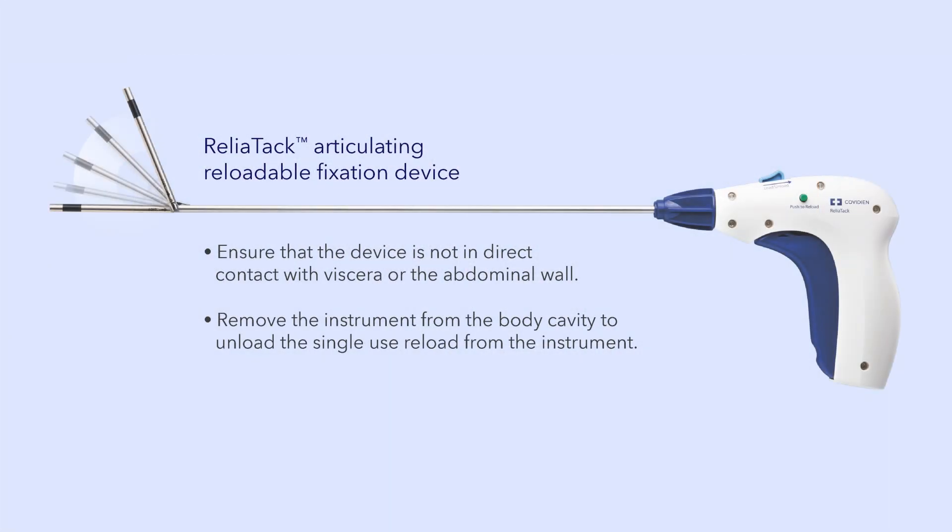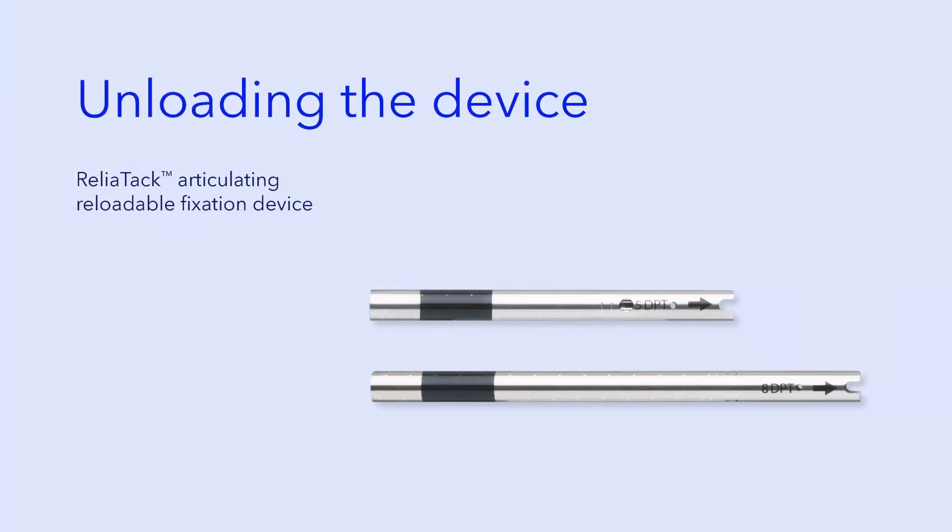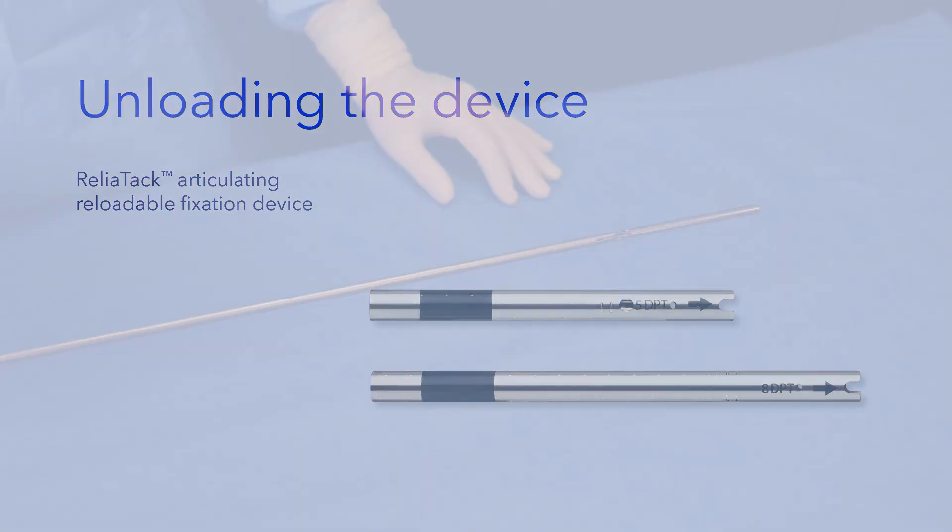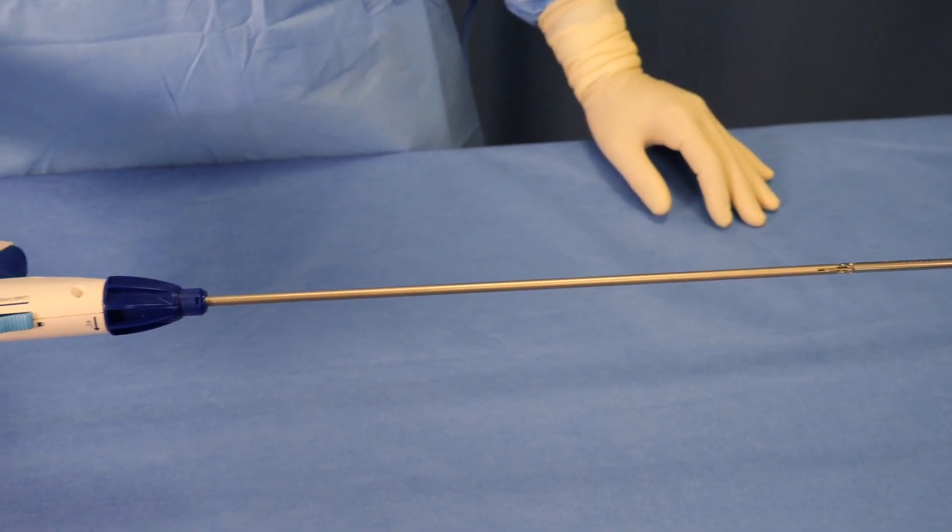After the reload has been completely fired, straighten the Reliatak device by turning the articulation knob counter-clockwise with a single turn, ensuring that the device is not in direct contact with viscera or the abdominal wall. Remove the instrument from the body cavity to unload the single use reload from the instrument.